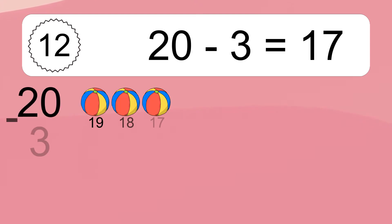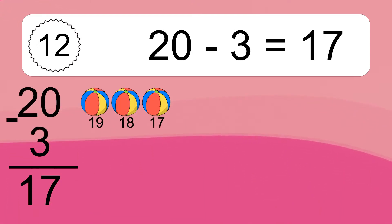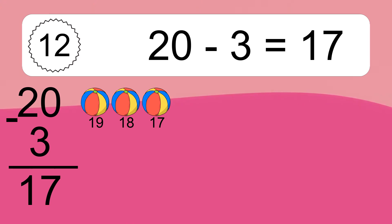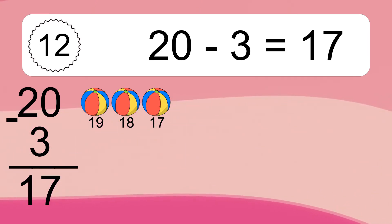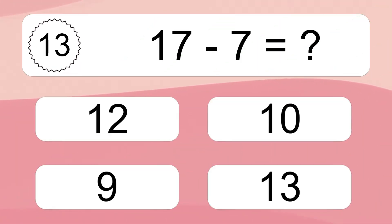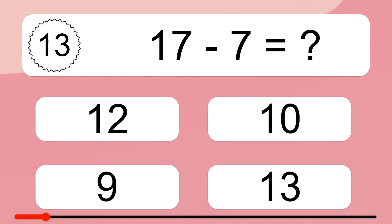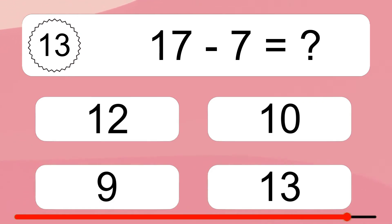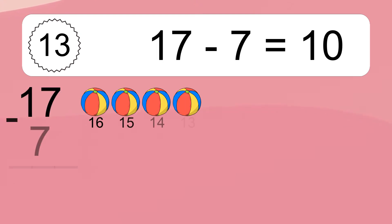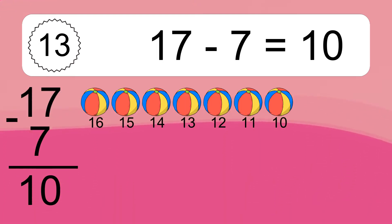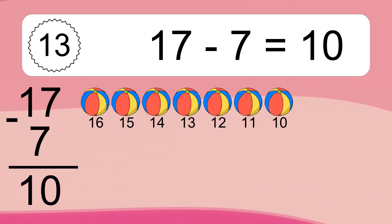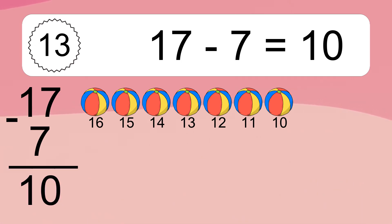20 minus 3 equals 17. Let's count it: 19, 18, 17. 17 minus 7 equals 10. Let's count it: 16, 15, 14, 13, 12, 11, 10.